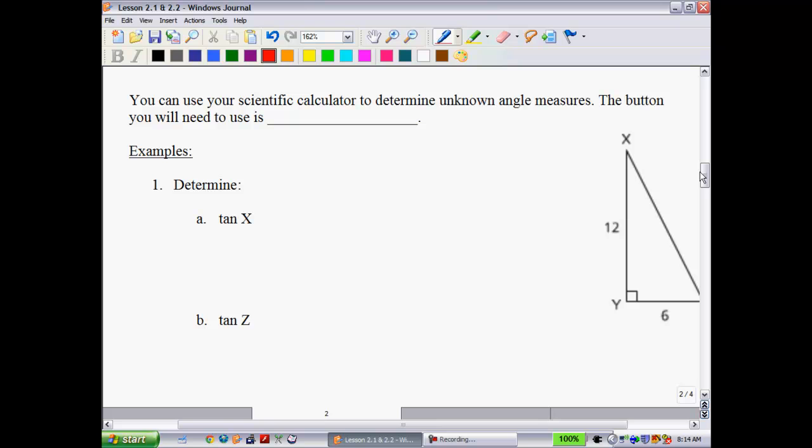You're definitely going to need your scientific calculator for this. There are ways of doing trigonometry without using a calculator using a table. In this course, though, we're going to be using our scientific calculators. So you can use your scientific calculator to determine unknown angle measures. The button you'll need to use looks like this. It is the tangent inverse button. It has a tan and a little negative one, but it's read as the tangent inverse.